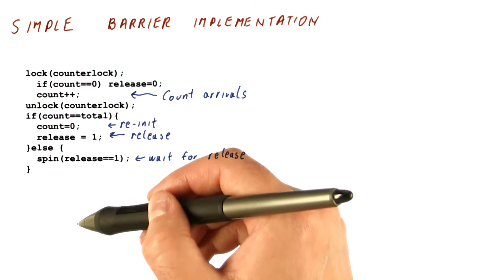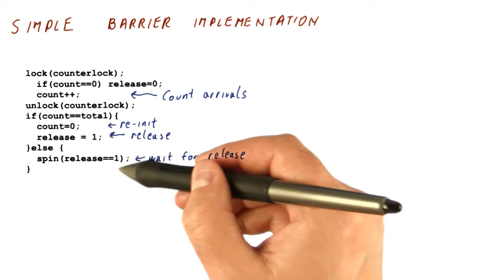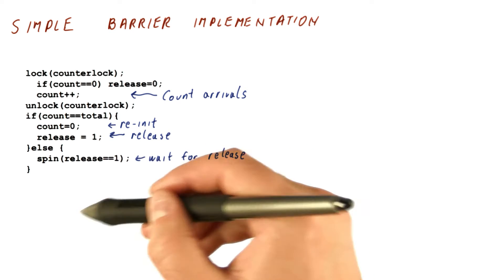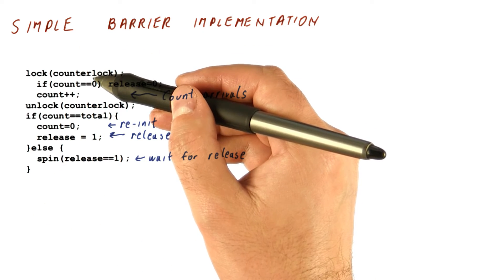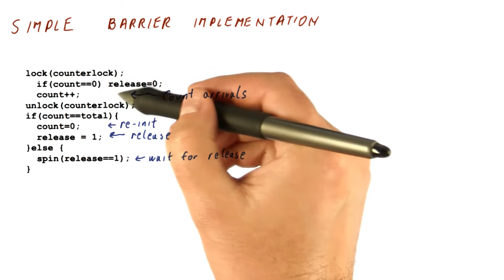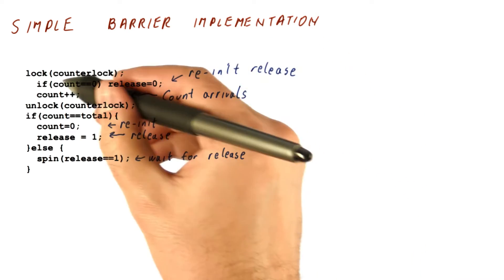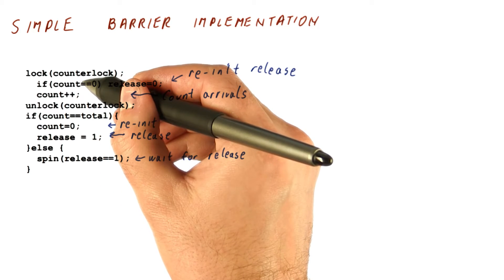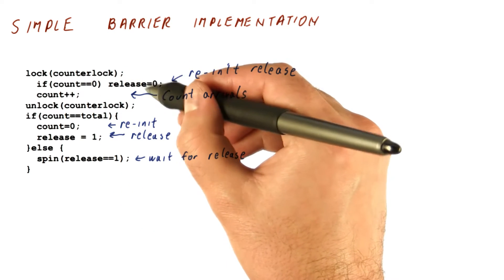After we are done going through one instance of this barrier, the release will be one. Before we can reuse this barrier, the release needs to be set at zero, and that's the purpose of this line here. If we are the first thread to arrive, then we're going to set release to zero.